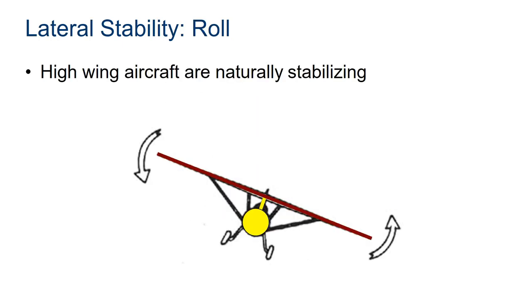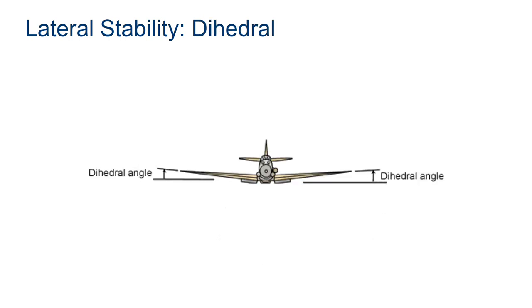Let's talk about roll and stability. A high wing aircraft like this is naturally stabilizing. So this is why a lot of the planes that people learn to fly in have a high wing, because high wing aircraft tend to return to stability.